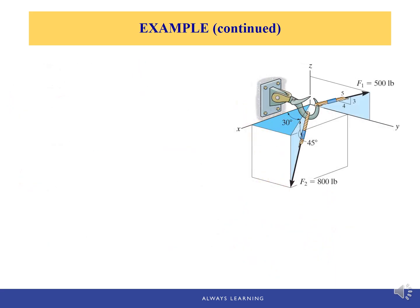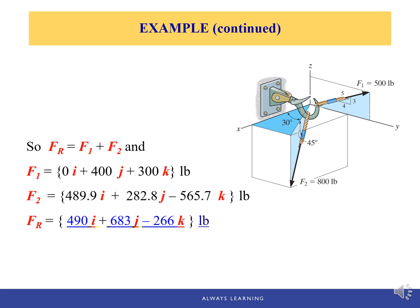With both F1 and F2 resolved into Cartesian vector form, we add corresponding components together to get the resultant force. 0 plus 489.9 gives the x component; 400 plus 282.8 gives the y component; and 300 plus negative 565.7 gives approximately negative 266, which is the z component of the resultant force.